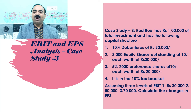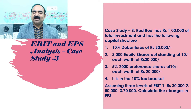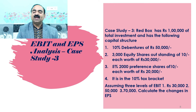Case Study 3. Redbox has ₹1 lakh of total investment and has the following capital structure: 1. 10% debentures of ₹50,000; 2. 3,000 equity shares outstanding of ₹10 each worth ₹30,000; 3. 5% 2,000 preference shares of ₹10 each worth ₹20,000; 4. It is in the 10% tax bracket; 5. Assuming 3 levels of EBIT — (1) ₹30,000, (2) ₹50,000, and (3) ₹70,000 — calculate the changes in EPS.